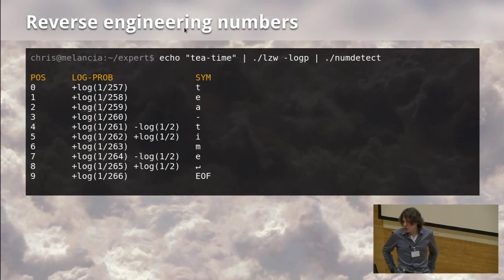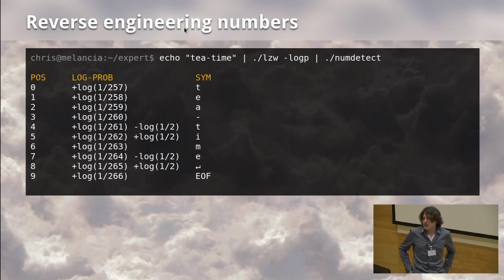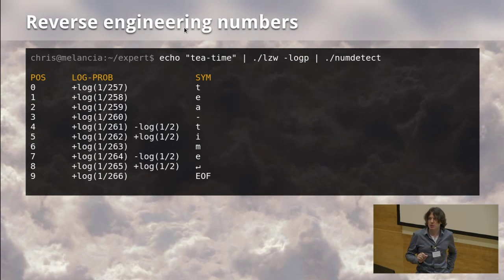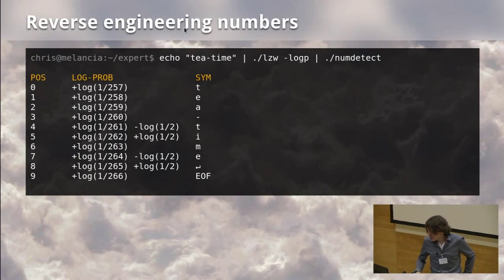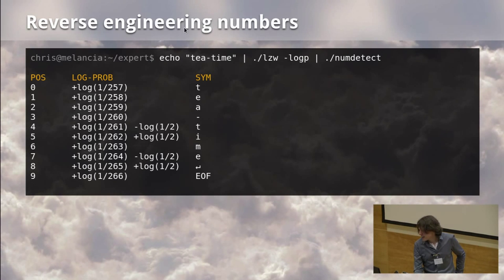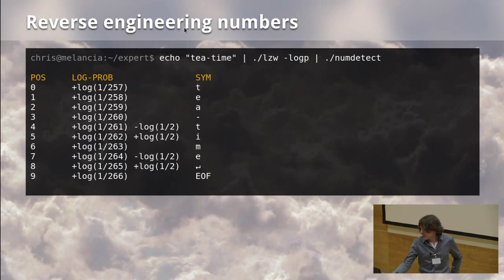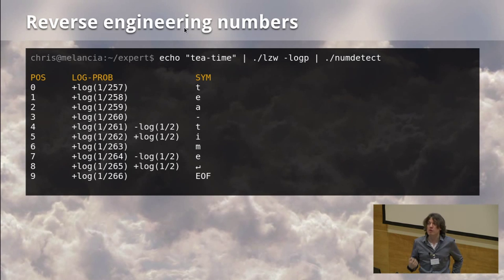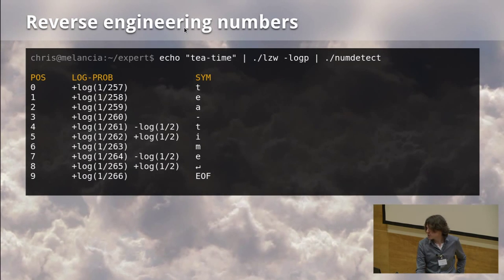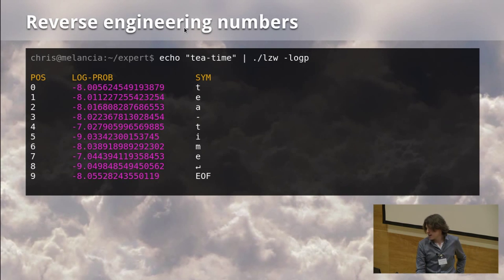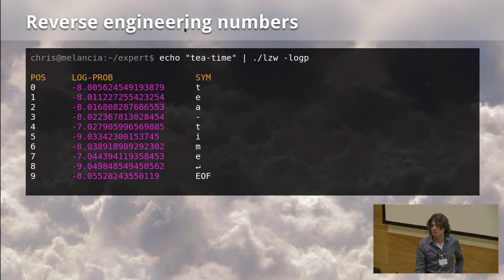Then the next one, it makes a choice between 258 things. That's because it's just added something to its dictionary, namely the T, and given that it's T time, that's probably a good thing to add. Then later on, it sort of subtracts a bit and adds a bit. That's because it has a partial match in what's already in its dictionary. That sort of story is much easier to reverse engineer than this bunch of numbers here, right?